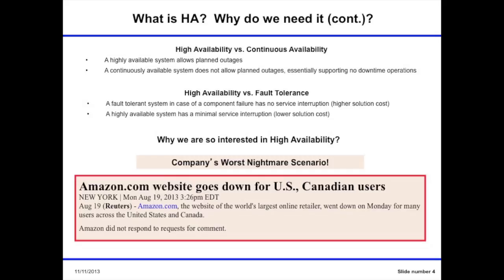Why are we so interested in high availability? This is the company's worst nightmare scenario — a piece from the New York Times. Amazon.com went down on Monday for many users across the United States and Canada, and Amazon didn't respond to requests for comment. What is interesting is that just on that day I was at Seattle, in Amazon, and I definitely felt an unpleasant mood among people there. The downtime was 40 minutes.